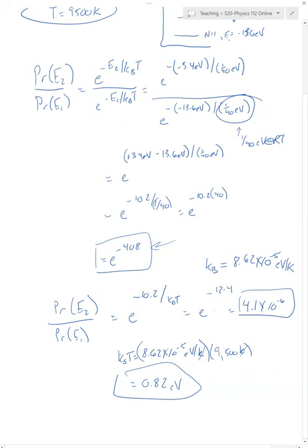Then we redid the calculation for the actual temperature of Vega and found that there are quite a bit more hydrogen atoms, although still not that many, in the second energy state compared to the first energy state in that star. Of course, you still see them, you'll still see that light, because although only four out of every million will be in that state, there are lots of hydrogen atoms in a star, so you'll still definitely see it. So that's the whole idea. I hope that was helpful, and I'll see you in class.